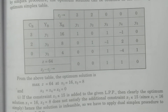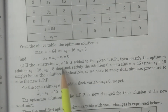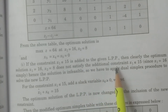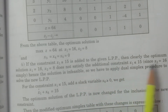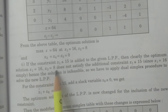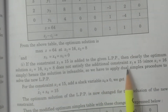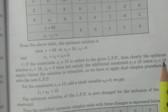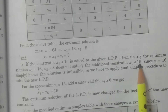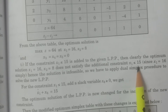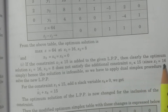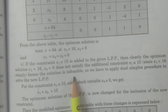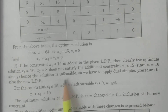Now if we consider the first problem — if the constraint x1 ≤ 15 is added to the given LPP — then obviously the solution x1 = 16, x2 = 8 does not satisfy the additional constraint x1 ≤ 15. Since x1 = 16, x1 ≤ 15 is not going to be feasible. Therefore the solution is infeasible.